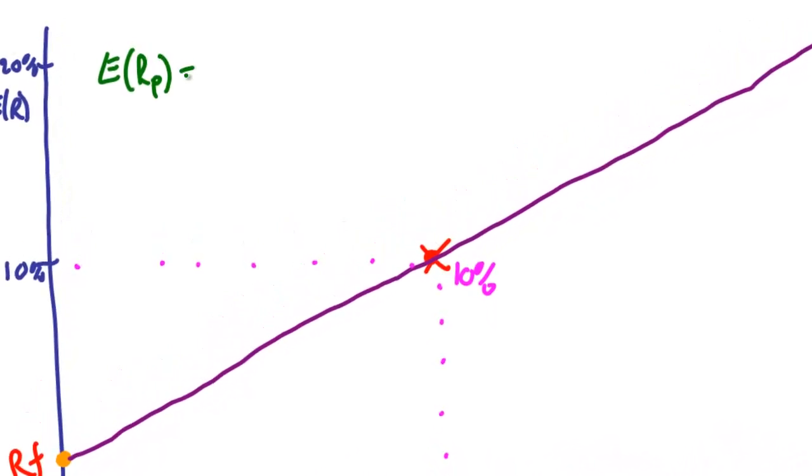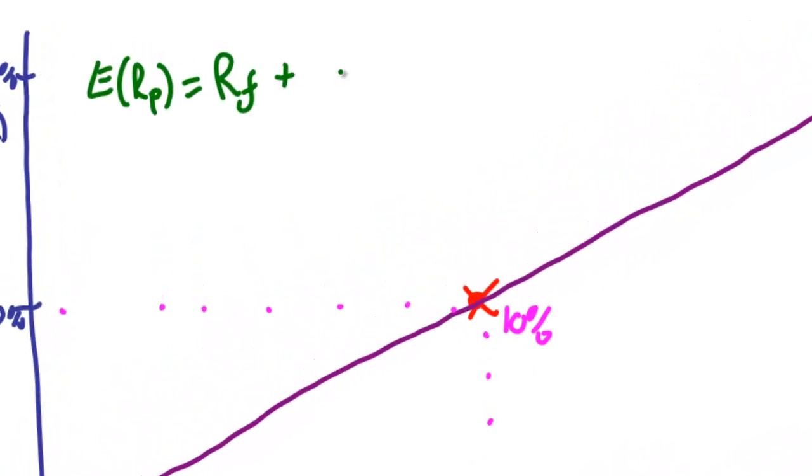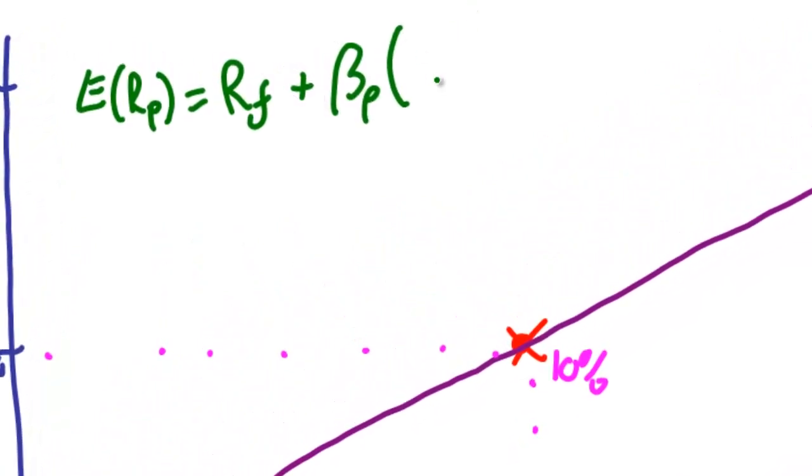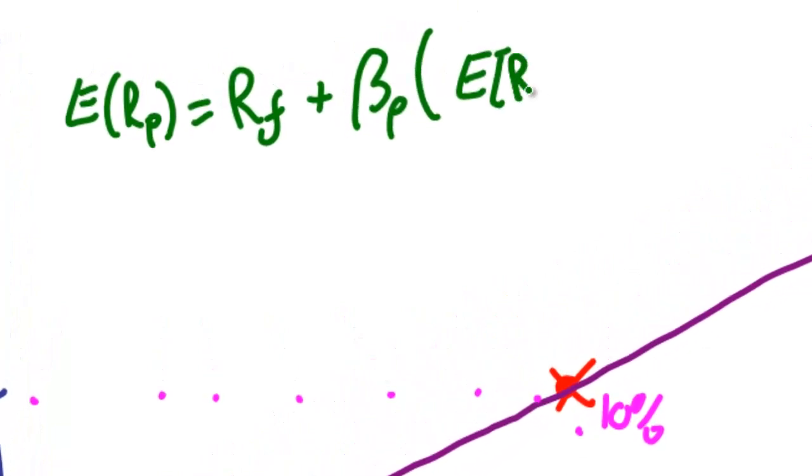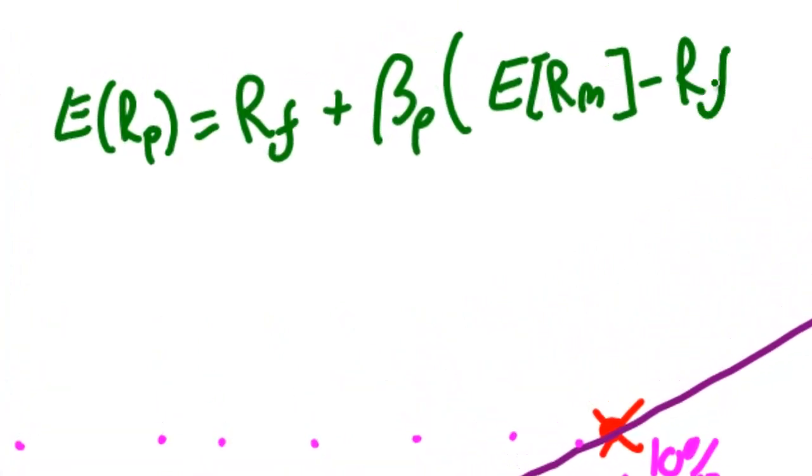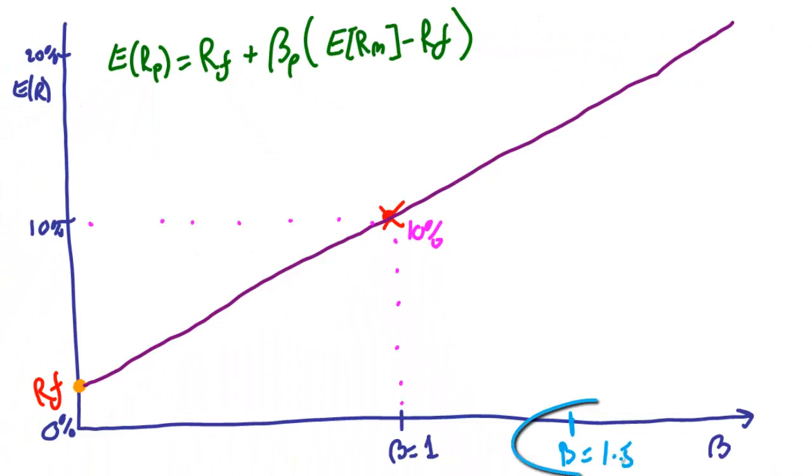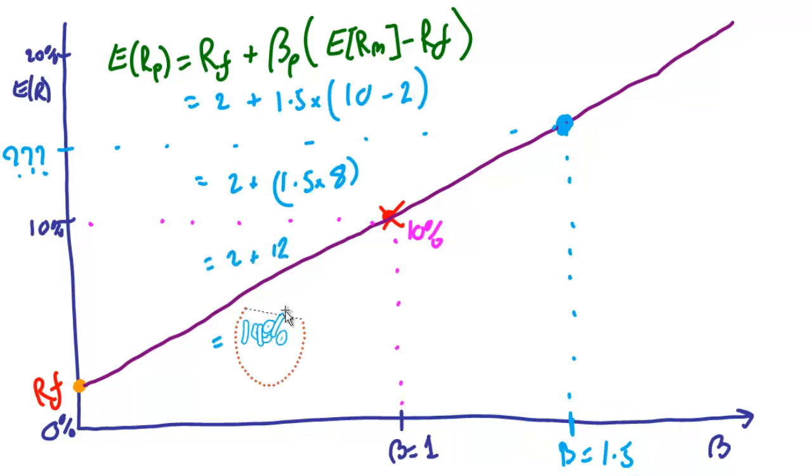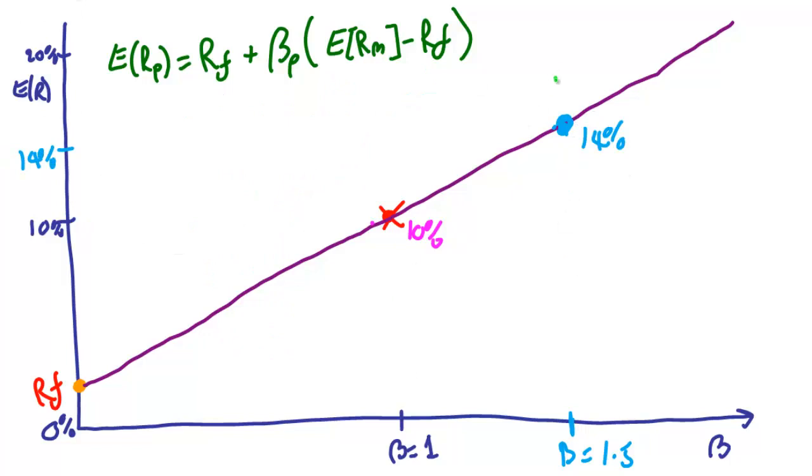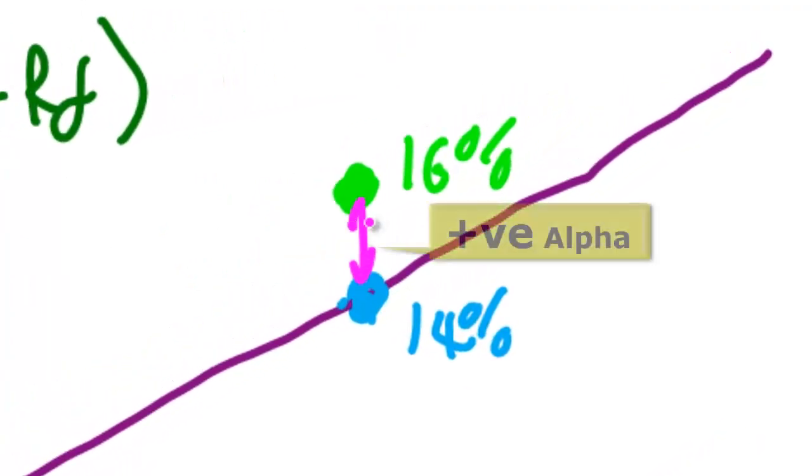Here's that security market line equation. The expected market return of any asset is the risk-free rate plus beta times the difference between the market's return and that risk-free rate. So what are we expecting if an asset has a beta of 1.5? If we run the equation, the asset should deliver us 14%. But what if the real-world return of the asset is actually 16%? Now you've found some positive alpha.